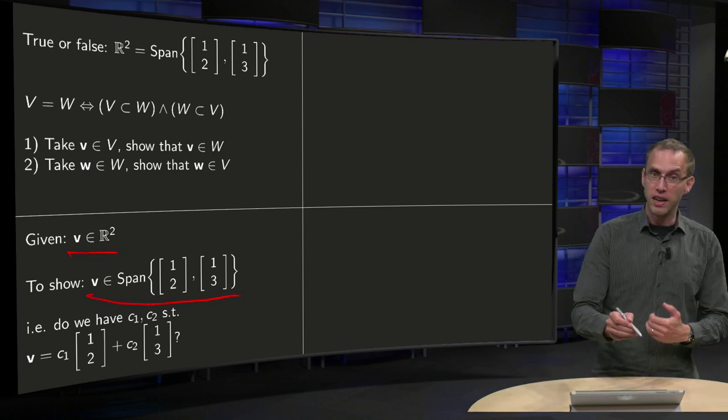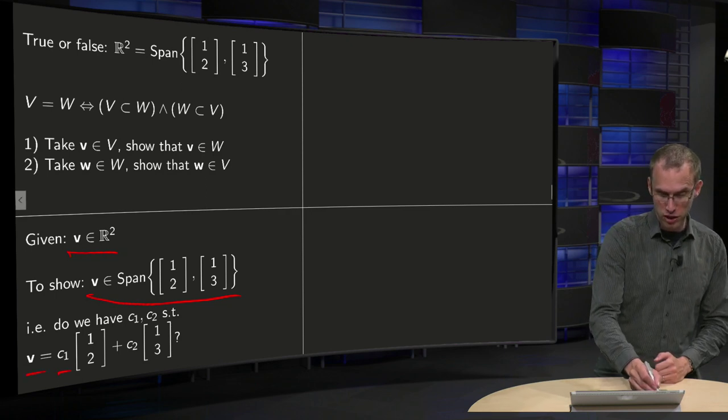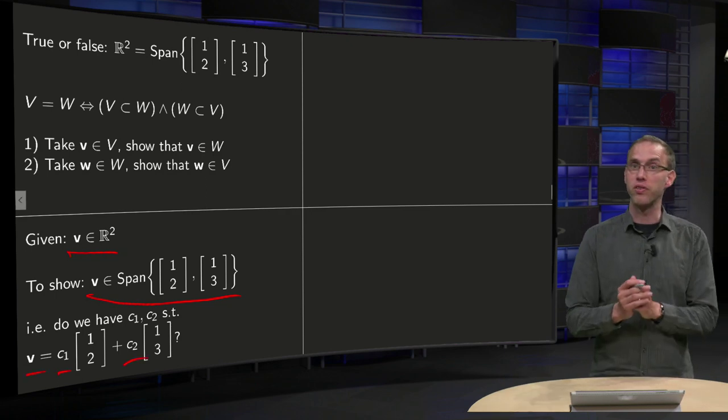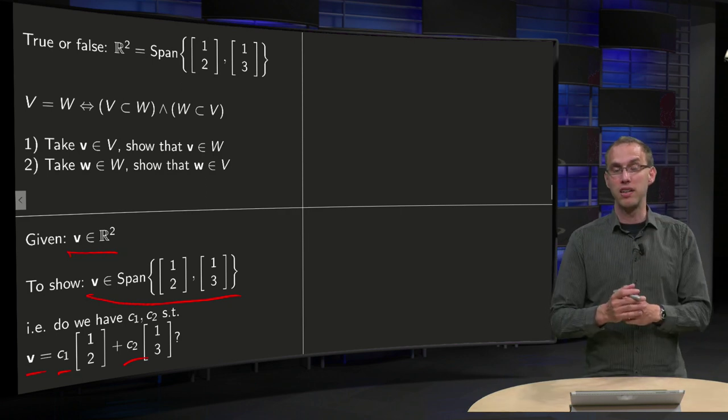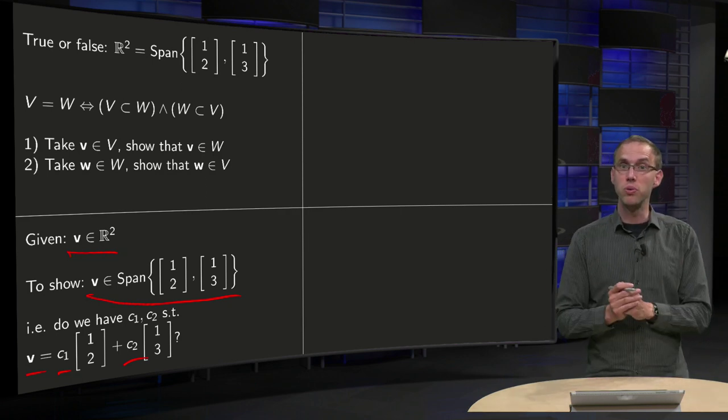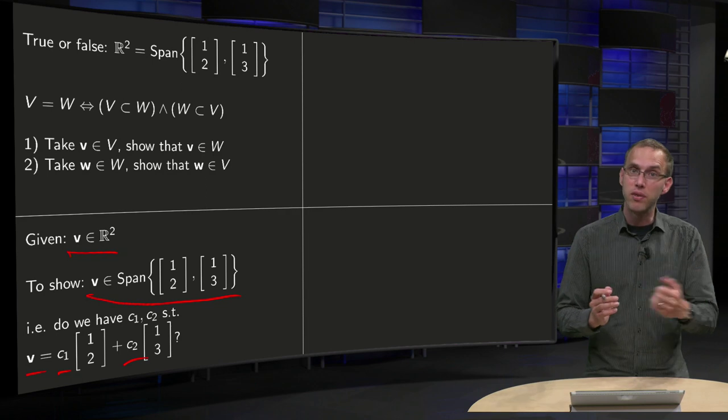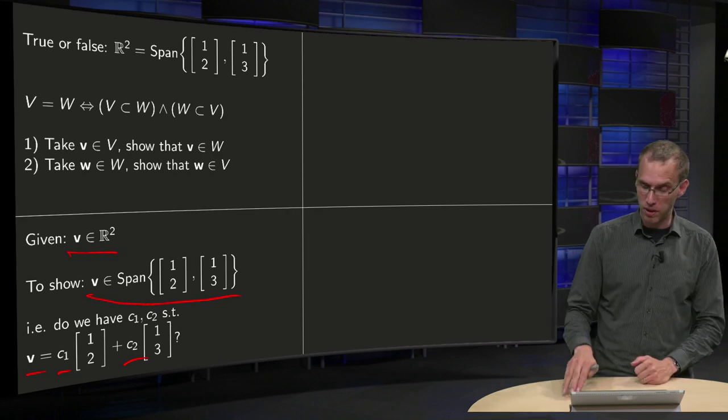Can we find scalars such that our v equals C1 times [1,2] plus C2 times [1,3]? If we can find scalars C1 and C2 for any v, then we know that any v is in our span as well. Well, let's try.